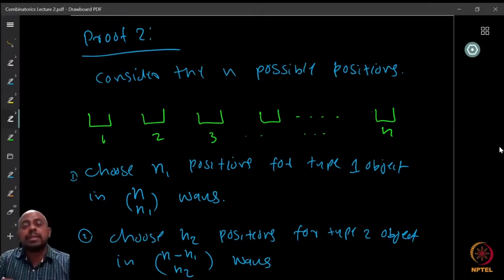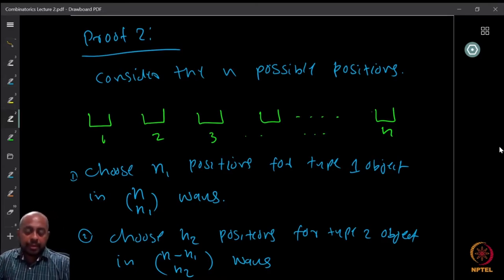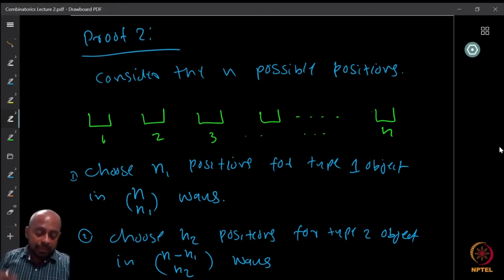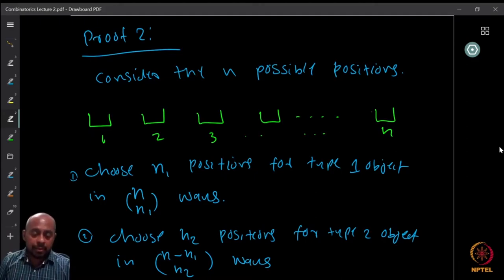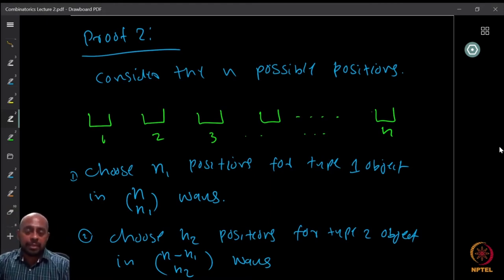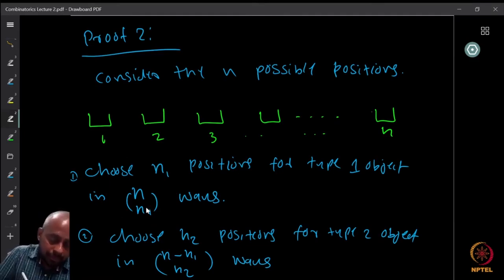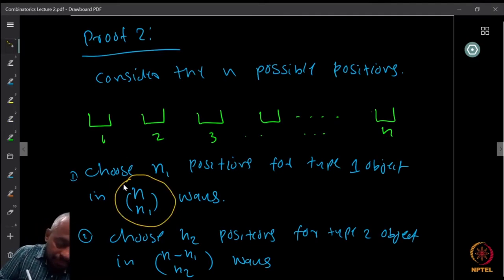Proof 2. Consider n possible positions for the n objects. So there are identical objects — I am not going to relabel them. So out of the n positions, I choose n1 positions to put the type 1 object. The type 1 objects are all identical, so I don't care about order — I just form a subset. I choose the n1 positions and put all copies of this object in those positions. How many ways can I choose the n1 positions? There are n positions available, so n choose n1 ways. I fix the n1 positions for the first object in n choose n1 ways.